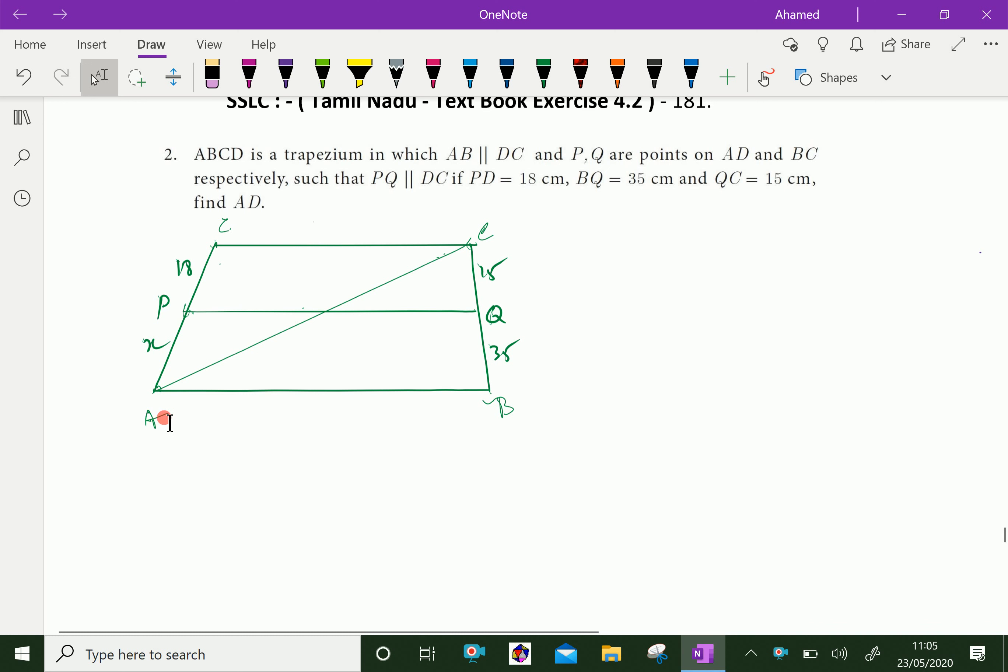That means, here, two parallel sides of the trapezium is AB parallel to CD. Now, by Thales theorem.